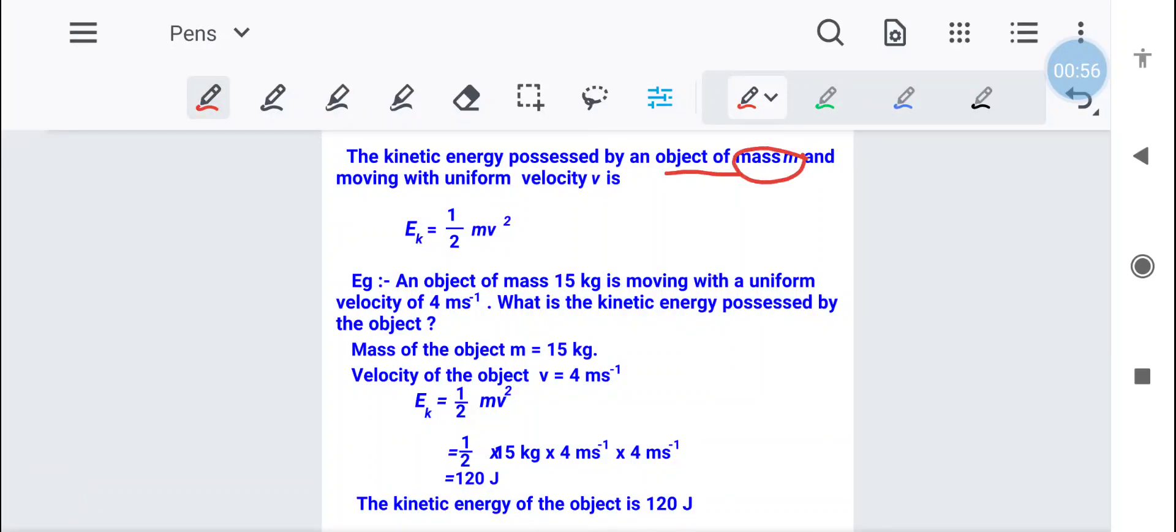If any object has mass m and its uniform velocity is v, then the kinetic energy will be half mv square. It will be half mv square. If we want to see this with the help of a numerical, to understand how to solve the numericals, let us see.